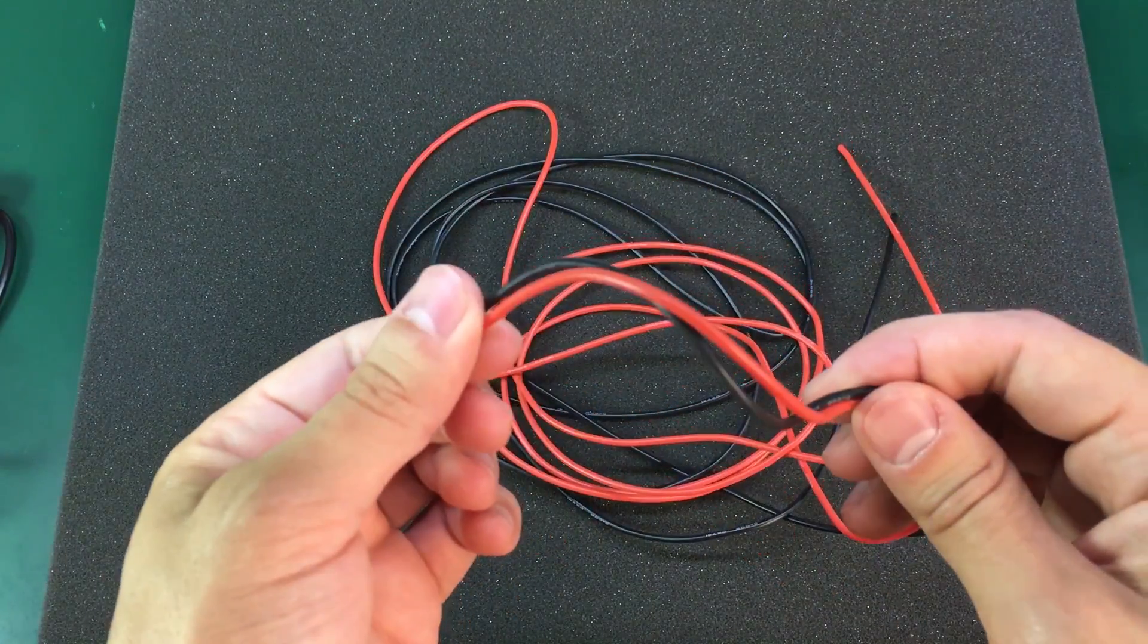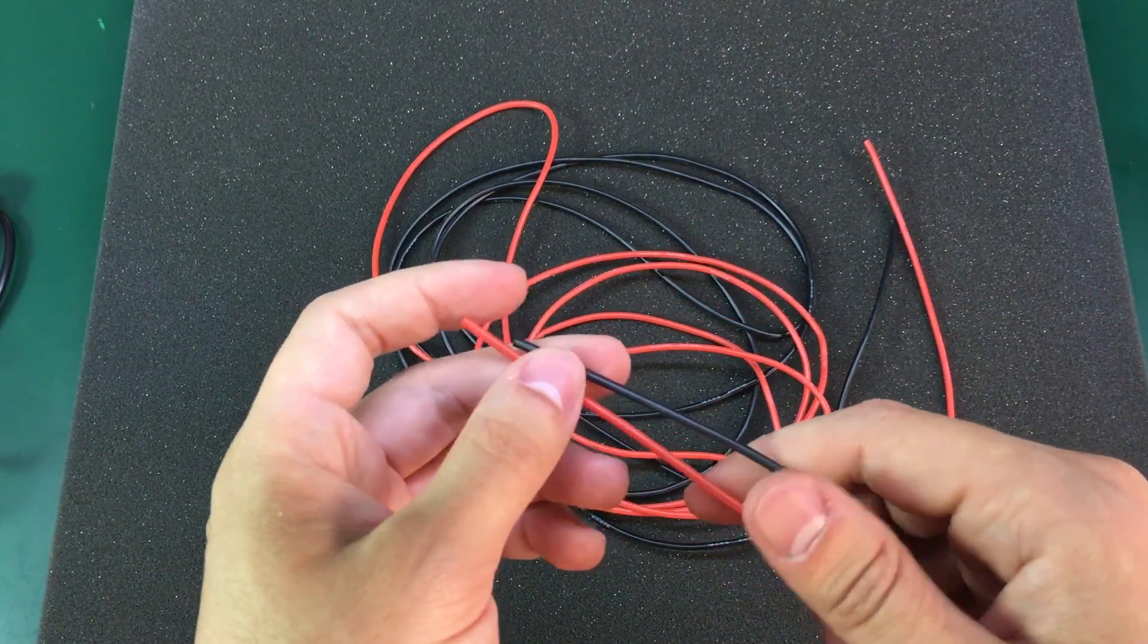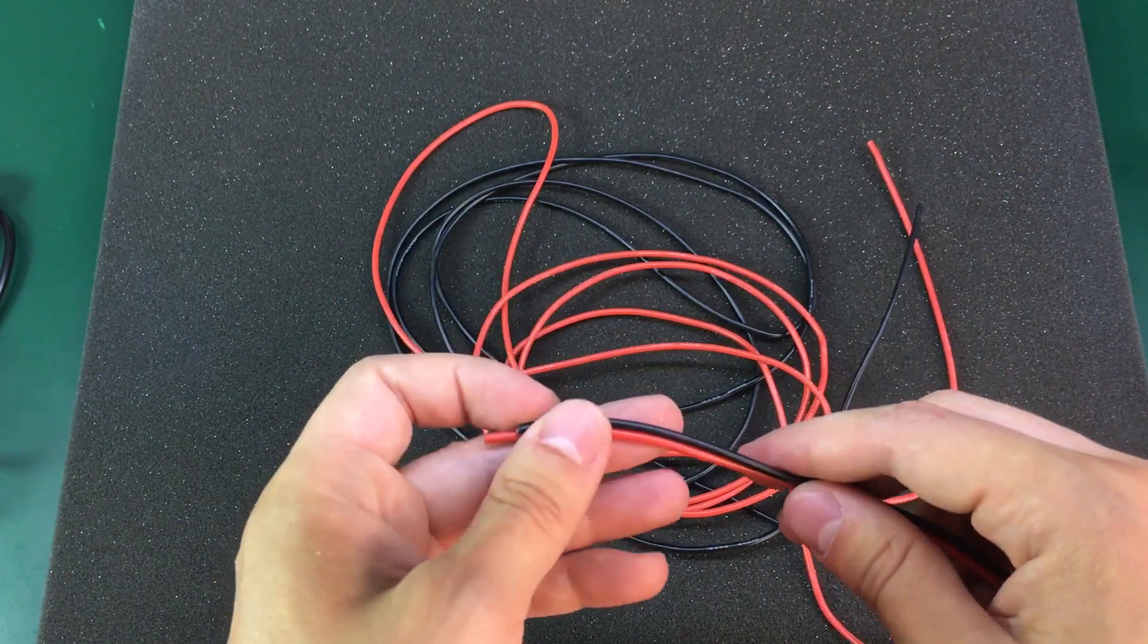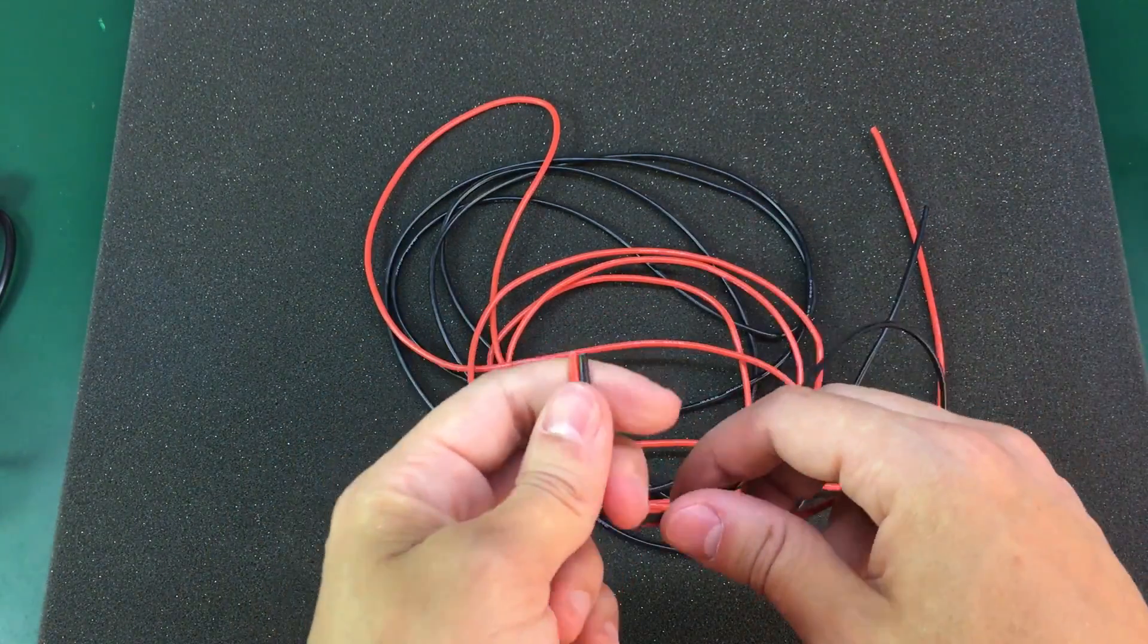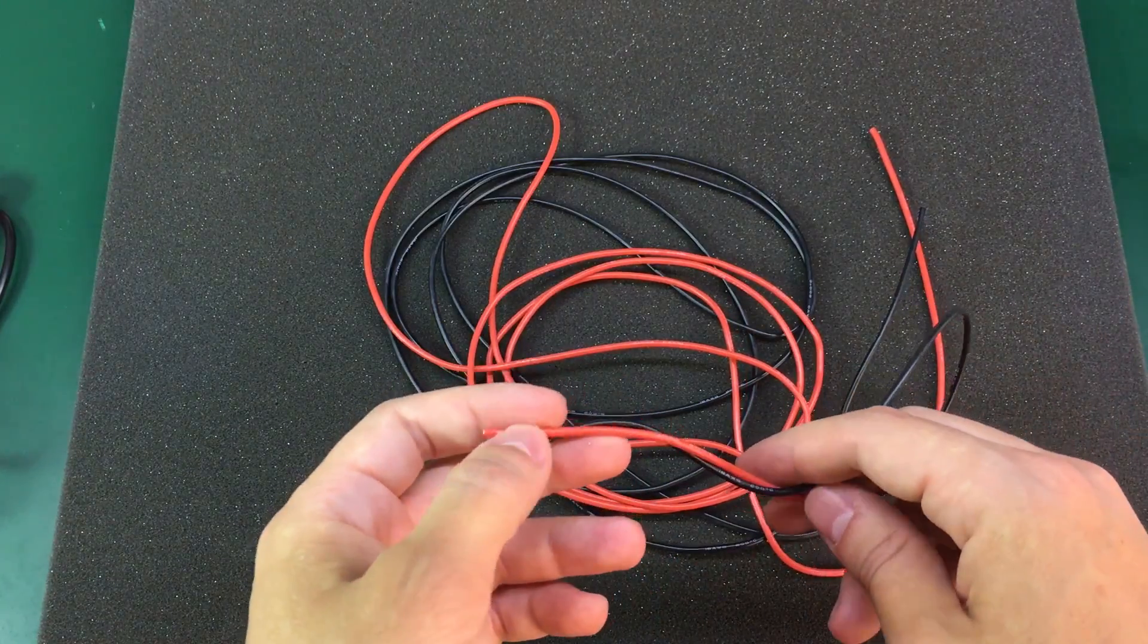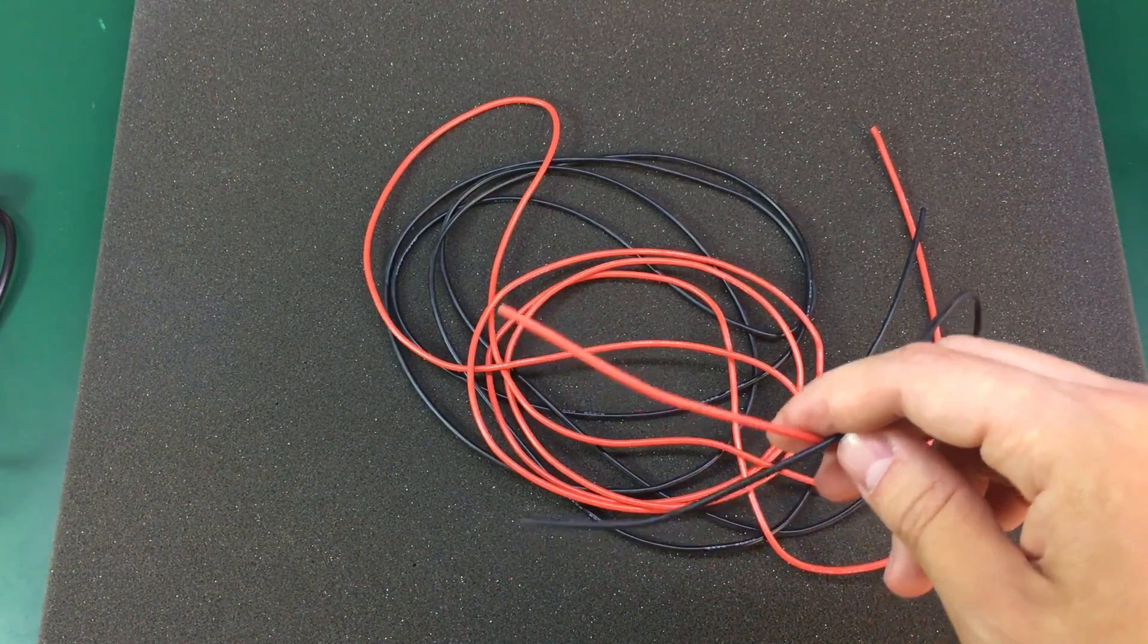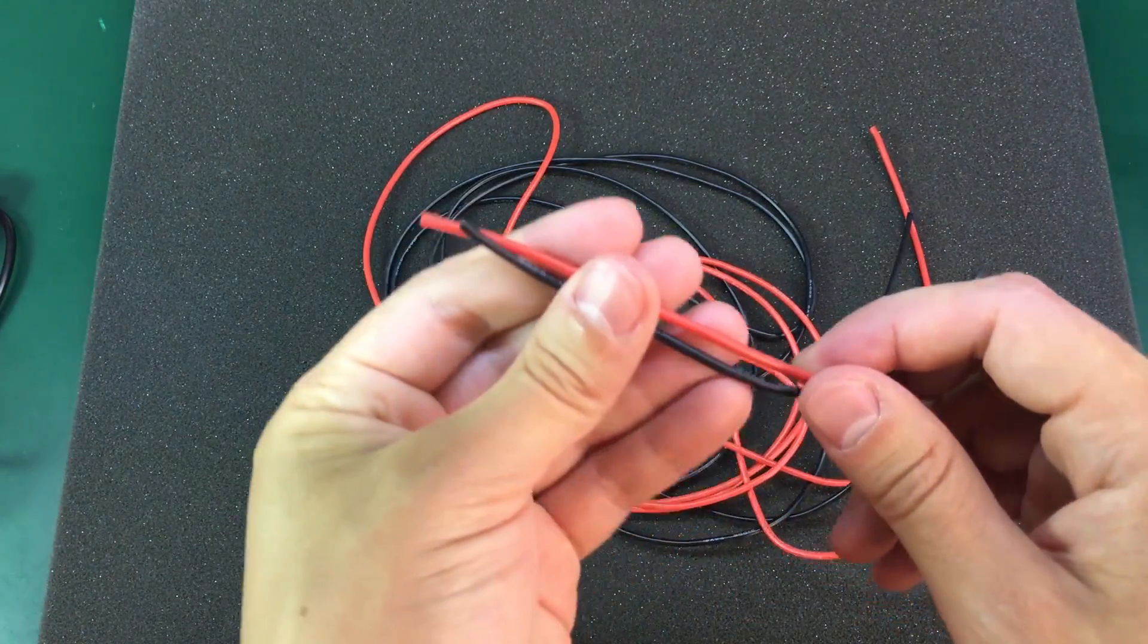I get most of my silicone cables from Hobbyking. I like their Turnigy brand, very good quality. But this time just for a couple of meters of cable it was not worth it to pay the shipping from Hobbyking. So I ordered from eBay instead.